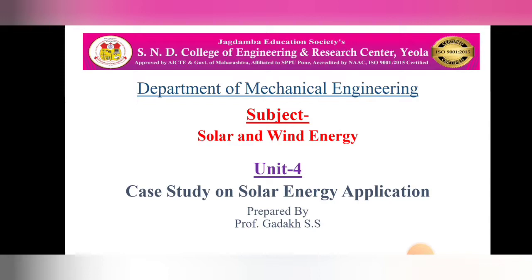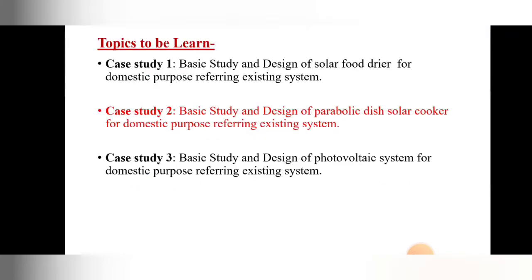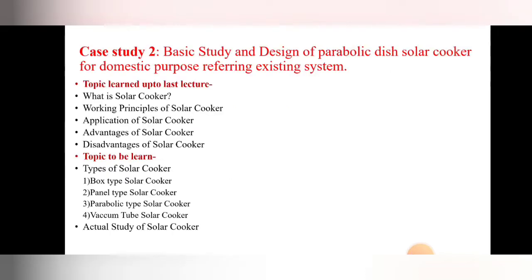Up to the last lecture we have seen the first case study on the solar food dryer. We also discussed the second case study related to the parabolic dish solar cooker, covering what is a solar cooker, its working principle, applications, advantages, and disadvantages.